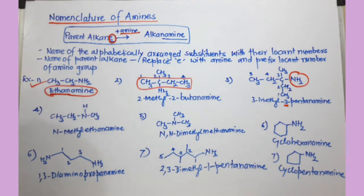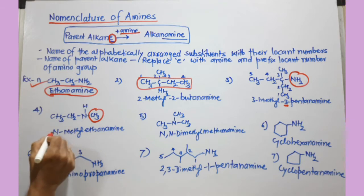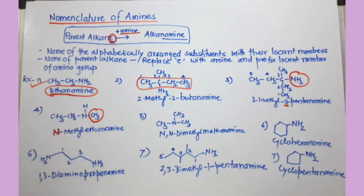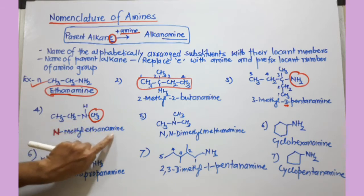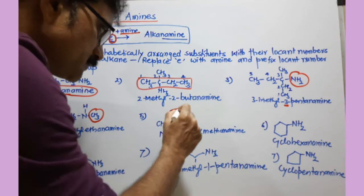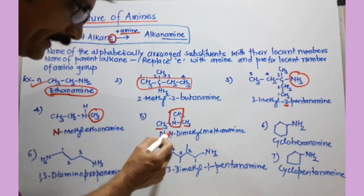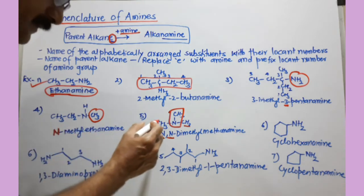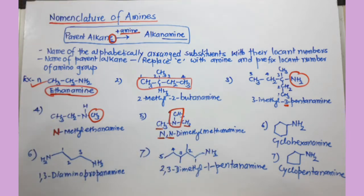Suppose the compound has an alkyl group on the nitrogen. You write that group first and use a capital N to represent which group is attached to the nitrogen. If a methyl group is attached, this is N-methyl. Since there are just 2 carbons, it is ethane — replace 'e' and add 'amine' — so this is N-methyl-ethanamine. If a compound has just 1 carbon with 2 methyl groups on the nitrogen, that becomes N,N-dimethyl — you repeat the N twice because there are 2 methyl groups — so this is N,N-dimethyl-methanamine.